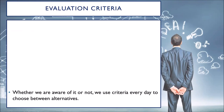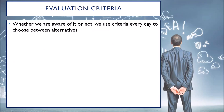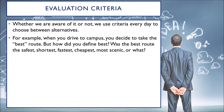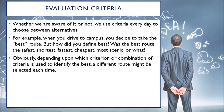Evaluation criteria: whether we are aware of it or not, we use criteria every day to choose between alternatives. For example, when you drive to campus, you decide to take the best route. But how did you define best? Was the best route the safest? Shortest? Fastest? Cheapest? Most scenic? Depending on which criterion or combination of criteria is used to identify the best, a different route might be selected each time.